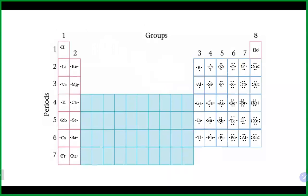Here are Lewis dot symbols for each of the elements. Group one has one dot, group two has two, and so on through groups three, four, five, six, seven, and eight. Helium only has two dots because it only has two valence electrons — it's element number two, so it can't have eight. Even though it's part of group eight, it only needs two.